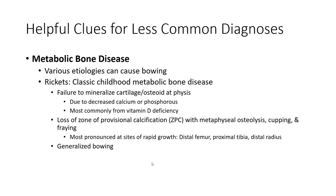Metabolic bone disease: various etiologies can cause bowing. Rickets is the classic childhood metabolic bone disease — failure to mineralize osteoid — due to decreased calcium or phosphorus, most commonly from vitamin D deficiency. There is loss of the zone of provisional calcification with metaphyseal osteolytic flaring, most pronounced at sites of rapid growth: distal femur, proximal tibia, and distal radius. Changes are generalized.